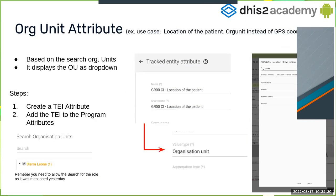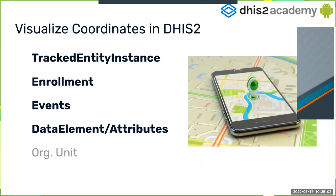The org unit attribute uses the org unit instead of a coordinate to locate the patient. To set this up, create a track entity attribute and use the value type 'Organisation Unit'. Once added to the program, you can search by organisation unit for the patient's location. However, as mentioned, the org unit is not supported for visualization in the Android application.